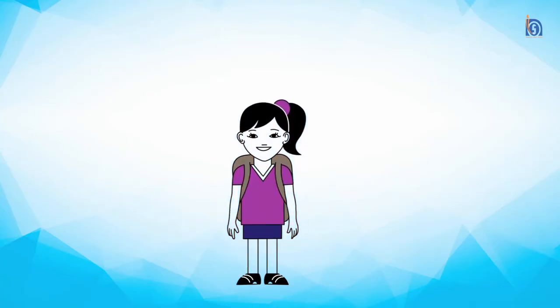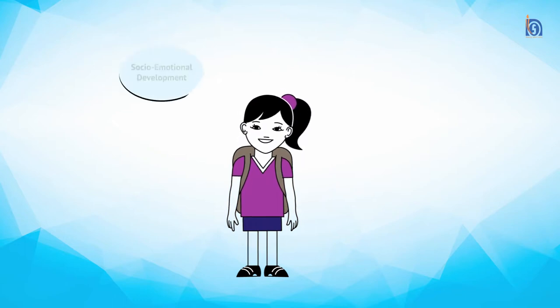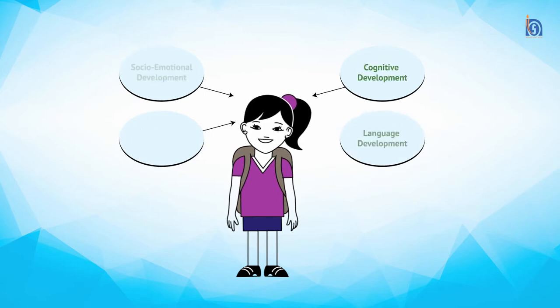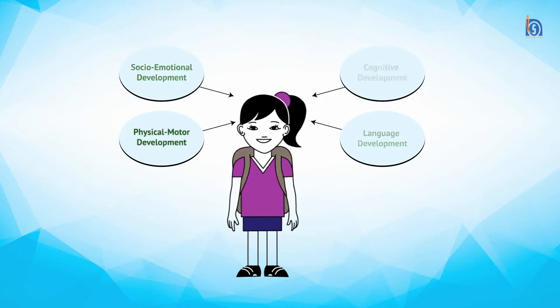In this video, we will be discussing domains of development. There are four domains of development when we talk about children: physical development, social-emotional development, cognitive development, and language development. I will go domain-wise and talk about the two age brackets simultaneously within each domain. Let us begin with the domain of physical development.